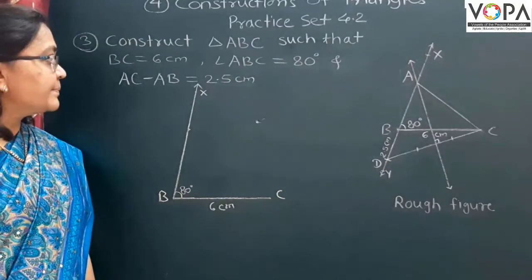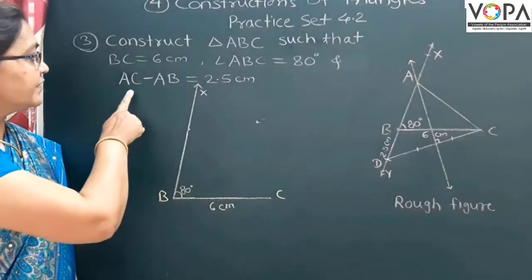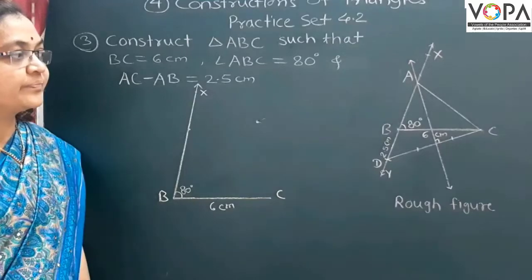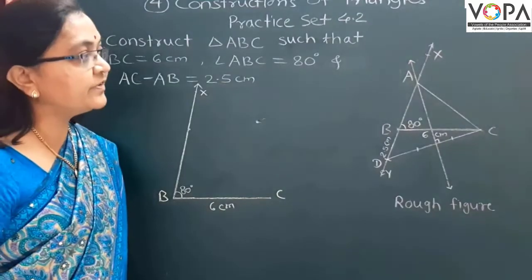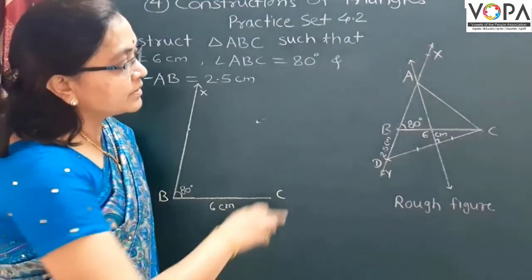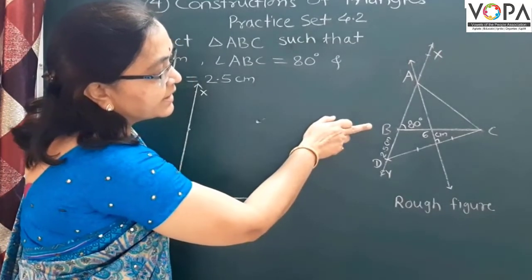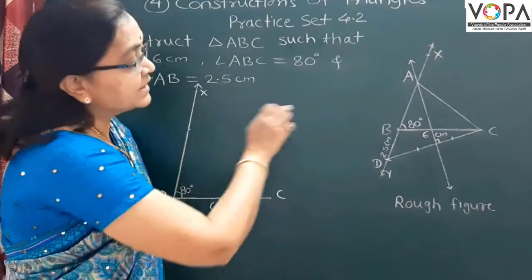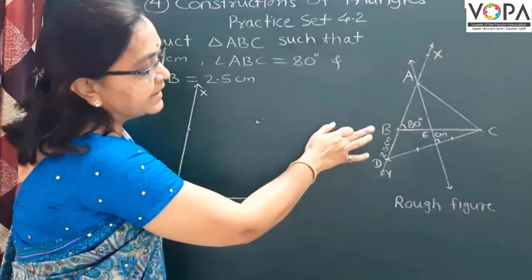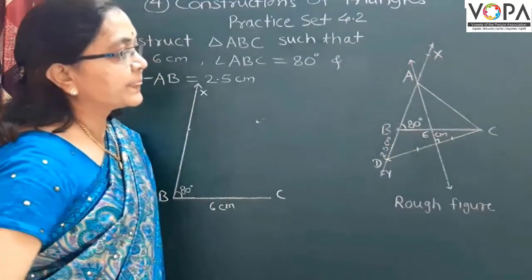Now, in this example, given us AC minus AB. If you observe this rough figure, here side AB is less. Means length of this side AB is less than AC.